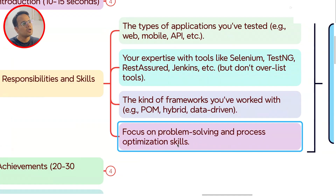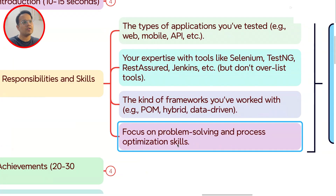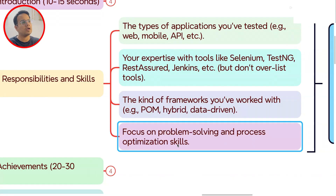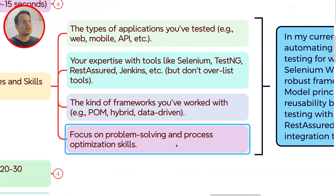You also have to focus on problem-solving and process optimization skills, because in automation testing you have to be very keen on these areas. As an automation test engineer, you should always look at how you can optimize processes, how you can reduce manual testing efforts, and how you can optimize those entire workflows. If you are optimizing processes, that is a very good thing to mention here.